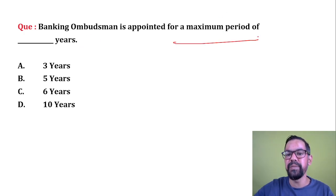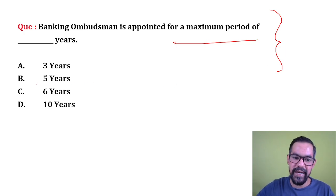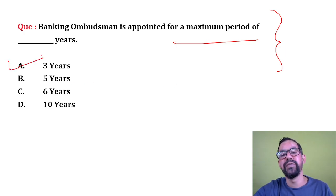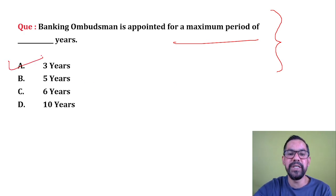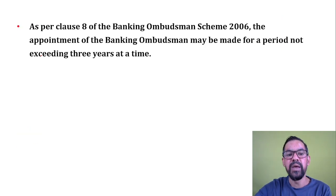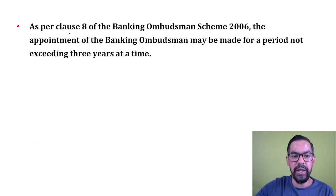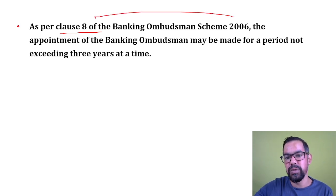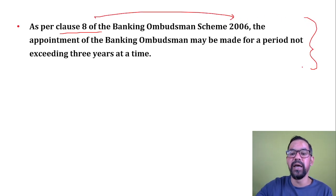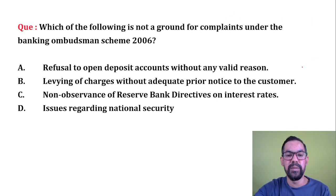Next question: Banking Ombudsman is appointed for a maximum period of how many years? The correct answer is three years. They are appointed by RBI under Clause 8 of Banking Ombudsman Scheme 2006 for a maximum period of three years.